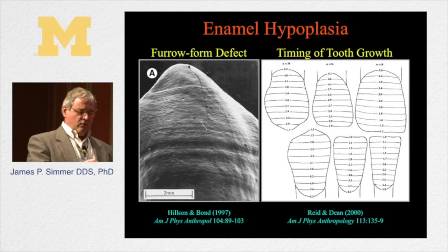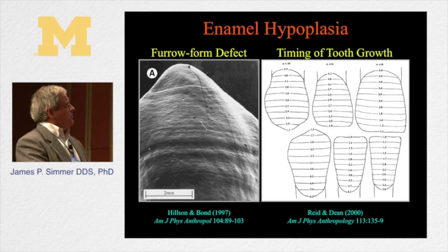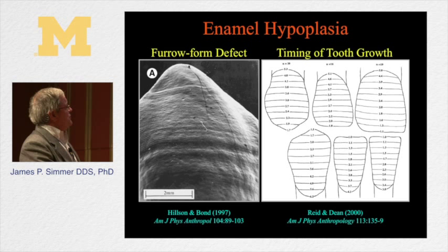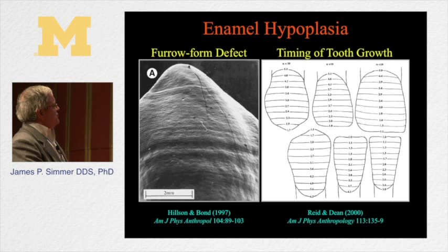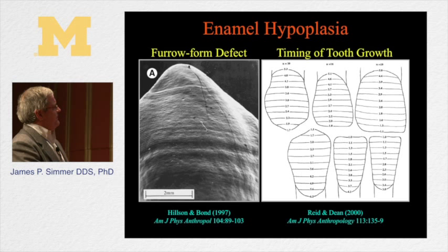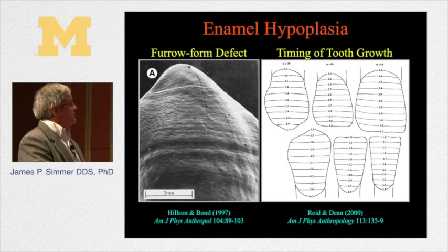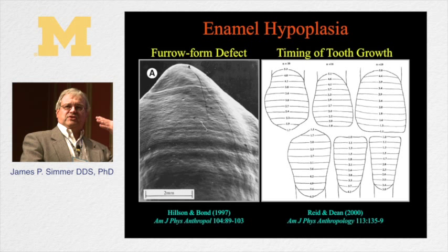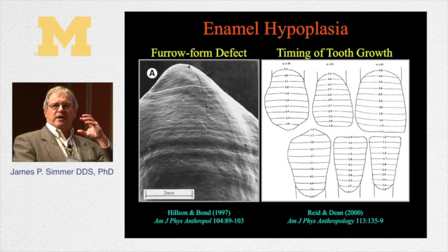Teeth form at a specific point in time. Here's a chart indicating at what time different parts of the crowns are forming — essentially ending the secretory stage and going into the maturation stage. If you see a patient with hypoplastic bands on a cuspid, by going to a chart like this you could say this disturbance occurred due to probably a high fever or systemic disturbance at about age 3.1. Not all teeth develop at the same time, so when you get a disturbance, there's a characteristic positioning of the defects in different teeth that allows you to understand when that defect occurred.